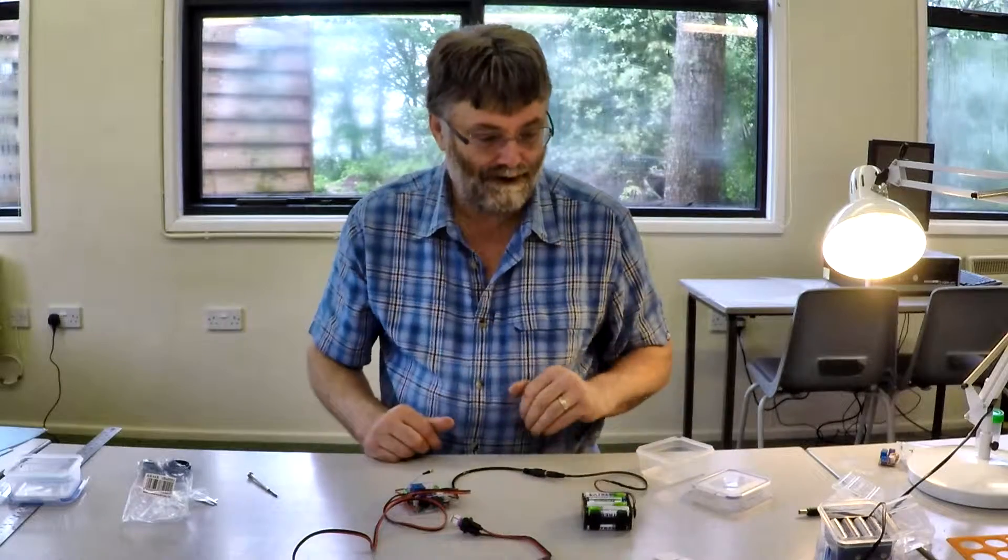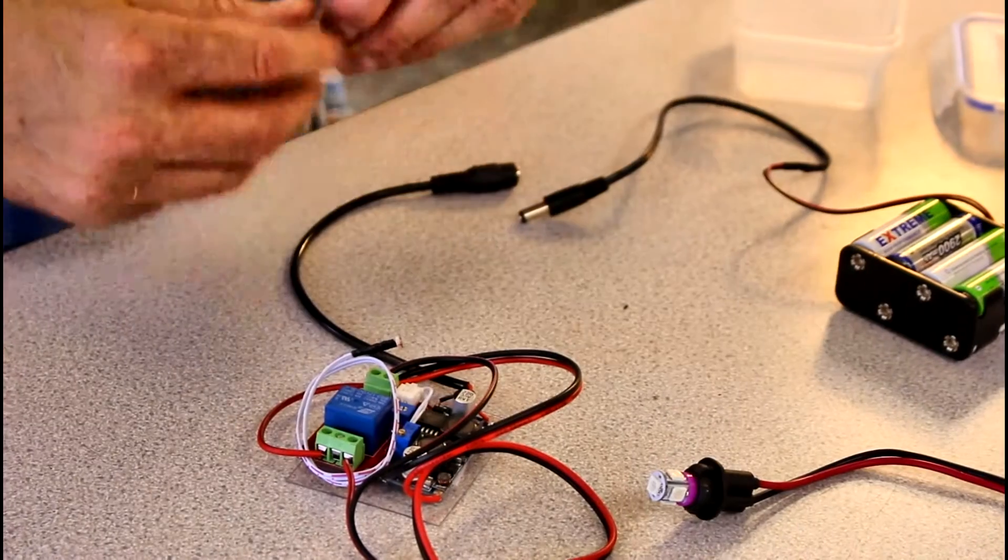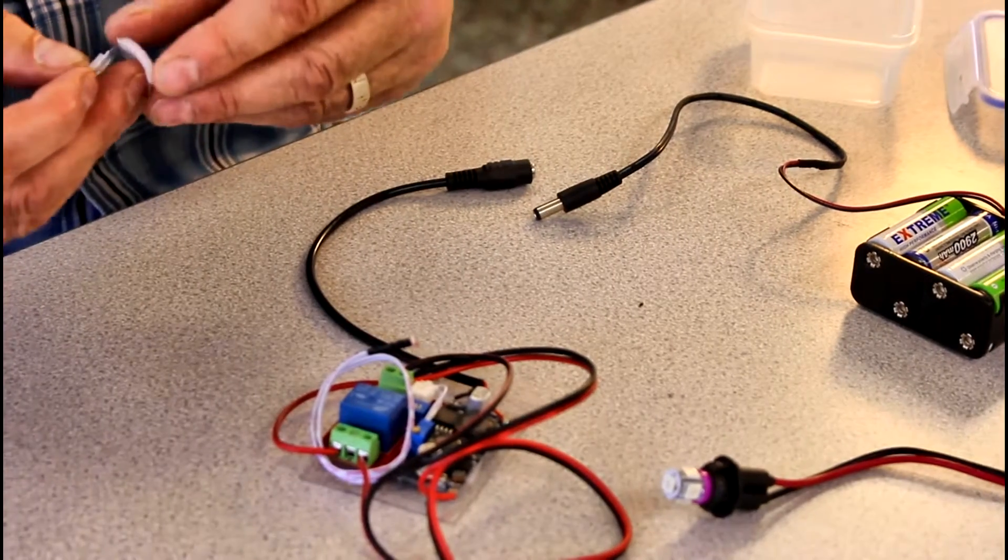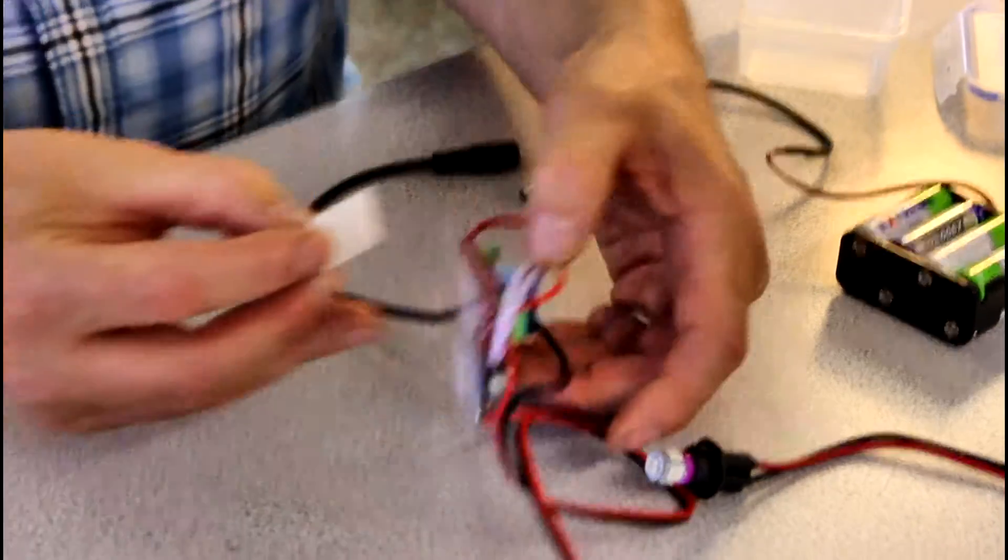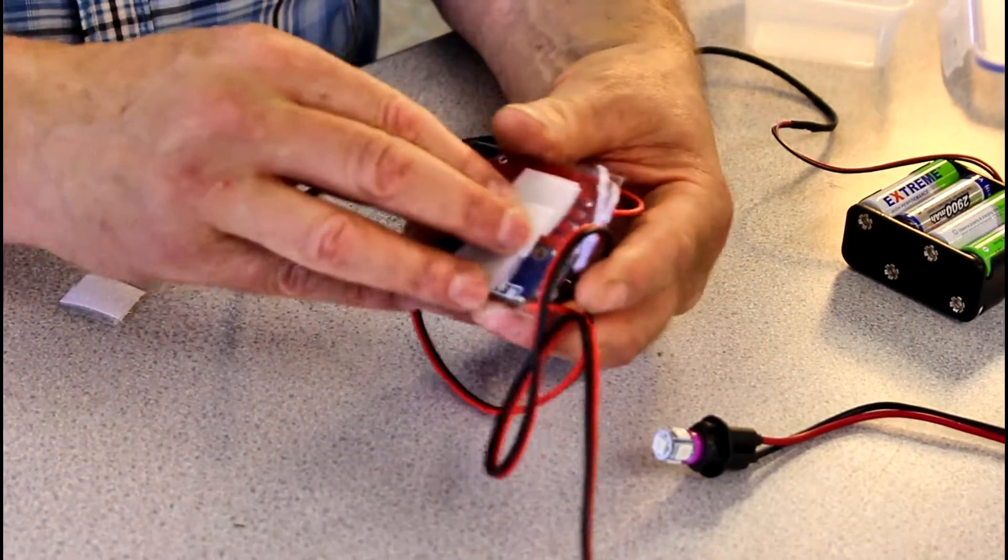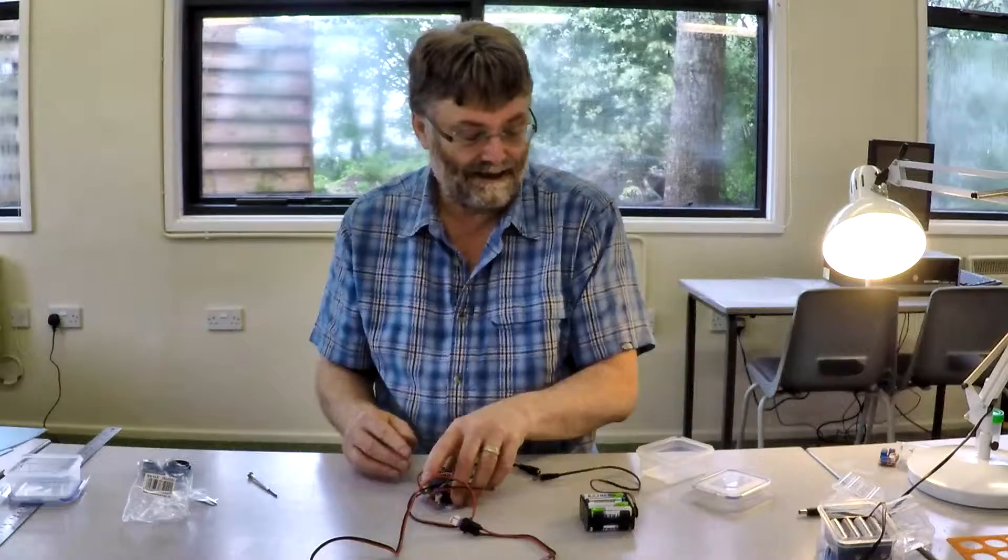So there is the electrics for a moth trap working. And the final thing that we're going to do, we just unplug it. And we're going to put a little bit of sticky Velcro on the underside of this little board. So that we can stick it inside the trap.